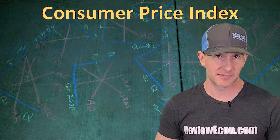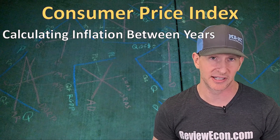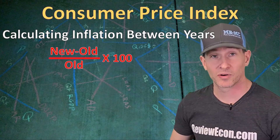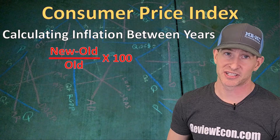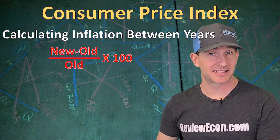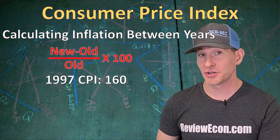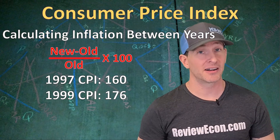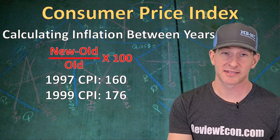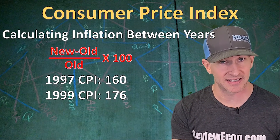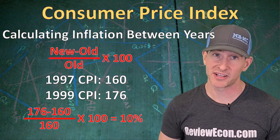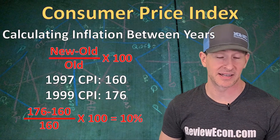On your AP Macroeconomics exam, you could be asked to calculate the inflation rate between two years. The formula is: new CPI minus old CPI, divided by old CPI, times 100. For example, if the CPI was 160 in 1997 and 176 in 1999, then: (176 − 160) ÷ 160 × 100 = 10% inflation over those two years.